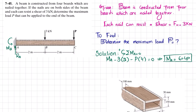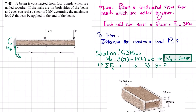From the moment equation we get Ma equals 6 plus 4P. Now we find Ra using the sum of all forces in the Y direction equals zero, taking upward forces as positive. Ra minus 3 minus P equals zero, so Ra equals P plus 3. P is not yet known; we will find it.